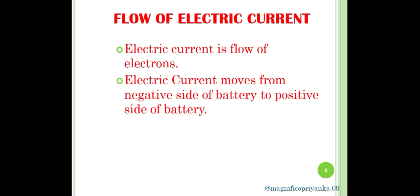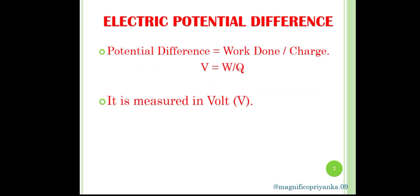However, in reality, it is the opposite — electric current flows from the negative end of the battery to the positive end. Next topic is electric potential difference. The potential difference between two points in an electric circuit is defined as the work done to move unit electric charge from one point to another in an electric circuit.